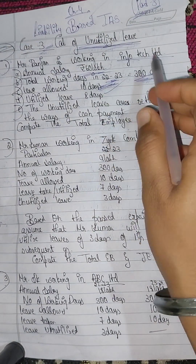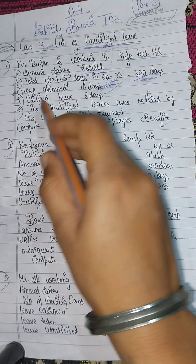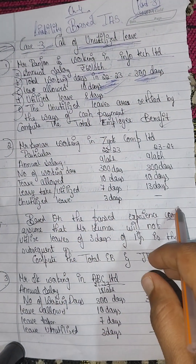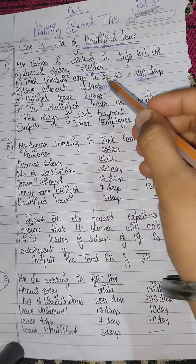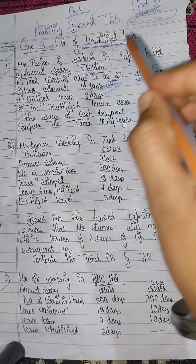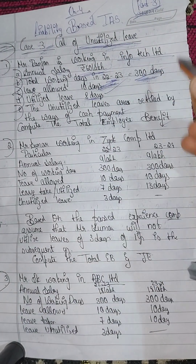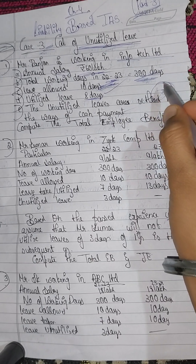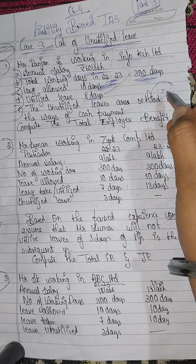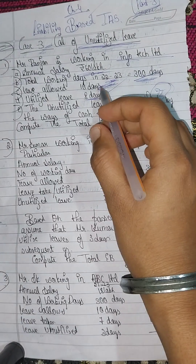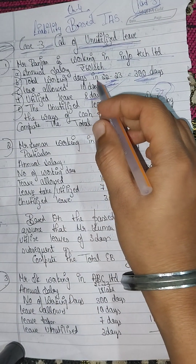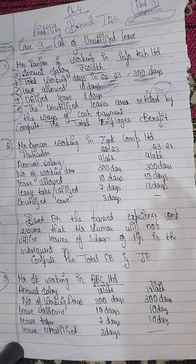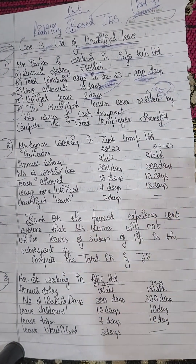Leave utilized is 8 days. The unutilized leaves are those which are not used — the bonus leaves. The unutilized leaves will be 2 days (10 minus 8), and the company will have to pay for those 2 unutilized days.